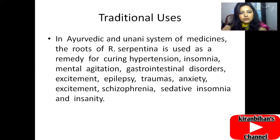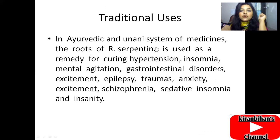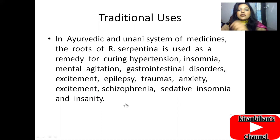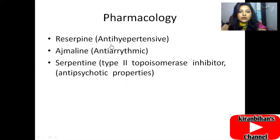The traditional uses of Rauwolfia serpentina: in Ayurvedic and Unani systems of medicine, the root is used as a remedy for hypertension. Other traditional uses include treatment of insomnia, mental agitation, gastrointestinal disorders, excitement, epilepsy, arrhythmia, anxiety, schizophrenia, and insanity — these are the main conditions treated by Rauwolfia serpentina.